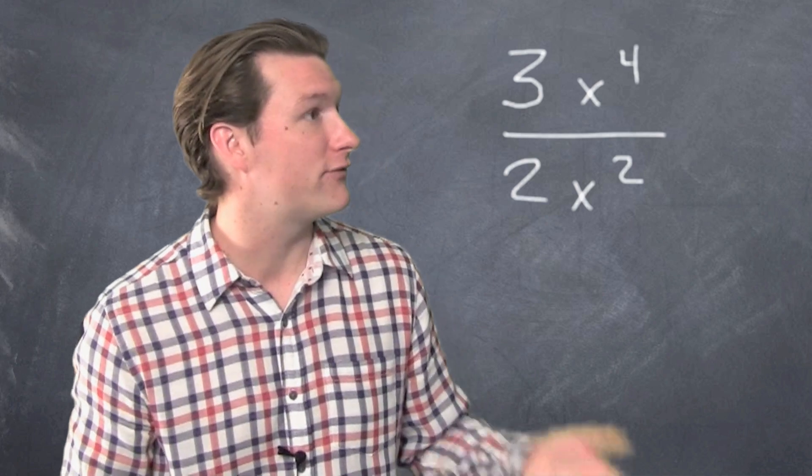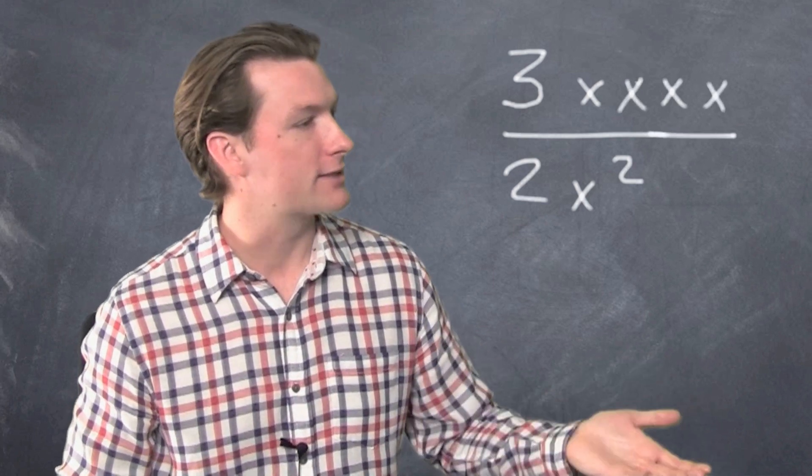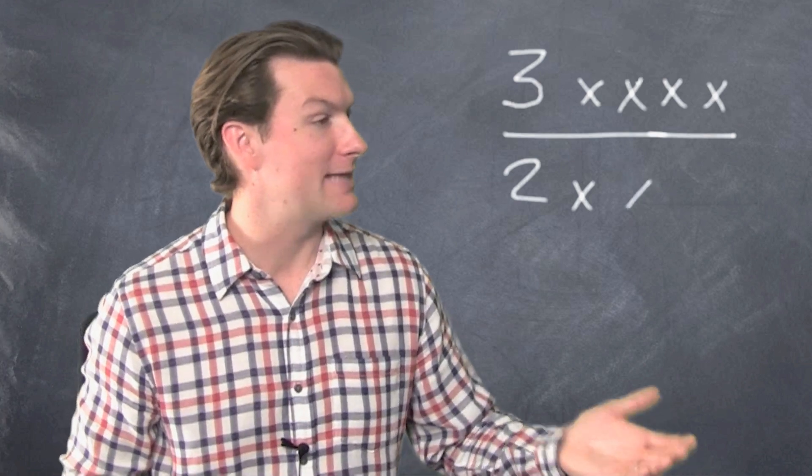Little numbers. We've got x to the 4th. That's x times x times x times x, over x squared. That's x times x. Okay.